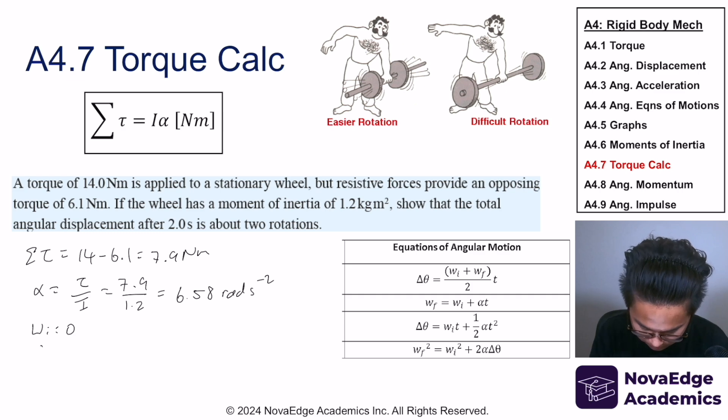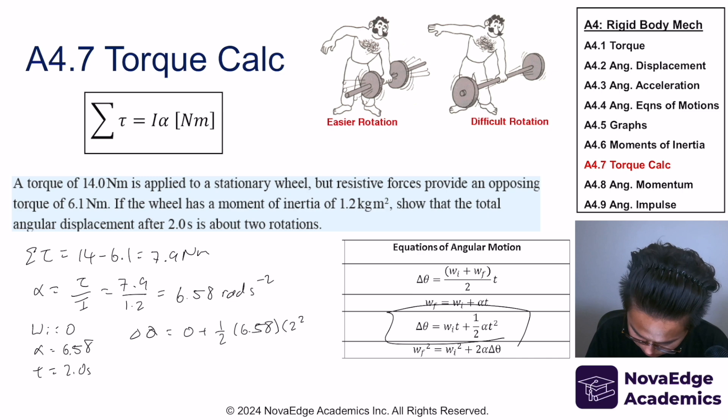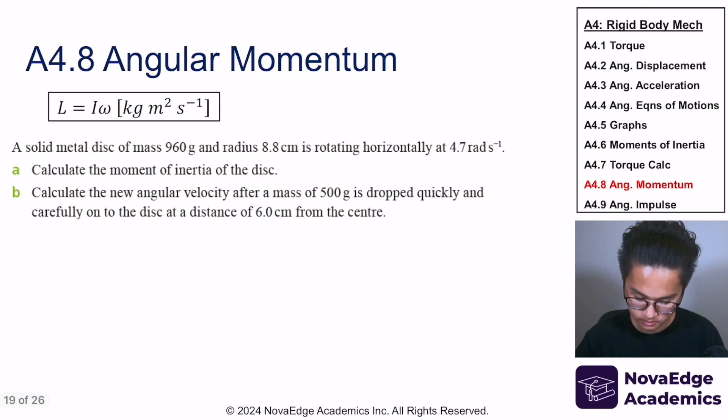Show that the total angular displacement after two seconds is about two rotations. So initial is 0, acceleration is 6.58, and time is equal to 2.0 seconds. So I want to find this. Let's use this guy. And I'm going to get 13.2 radians.